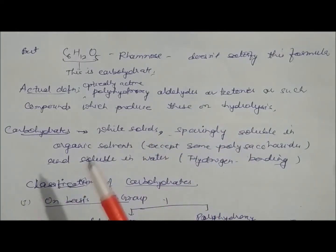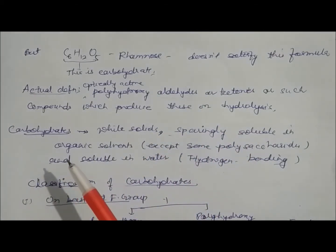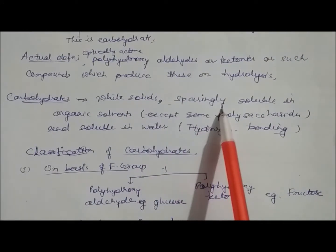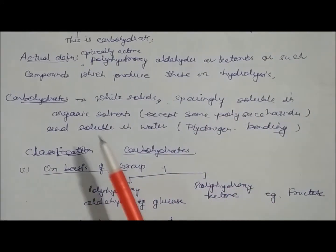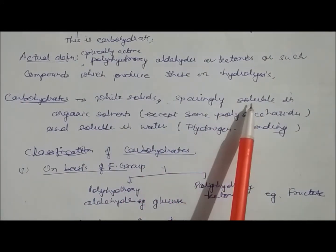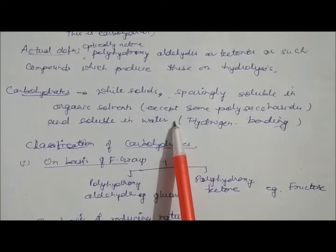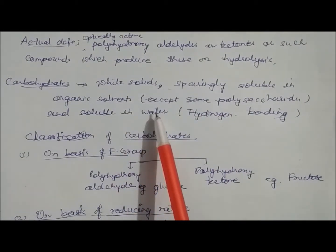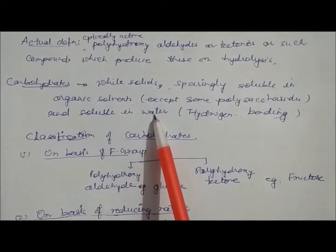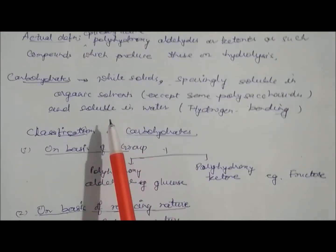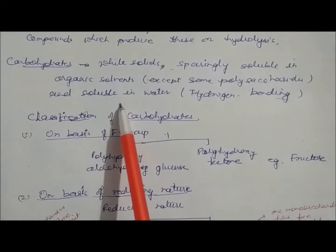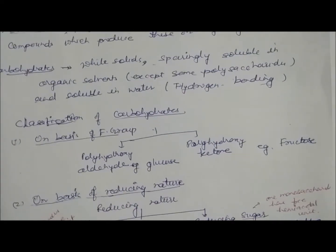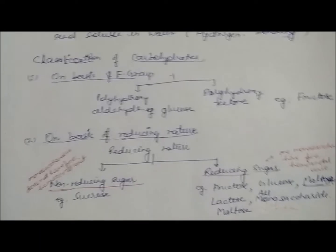Properties of carbohydrates: they are white solids, sparingly soluble in organic solvents, and very highly soluble in water. They are soluble in water because they form hydrogen bonding through their OH (hydroxy) groups. Now we will see the different types of classification of carbohydrates.